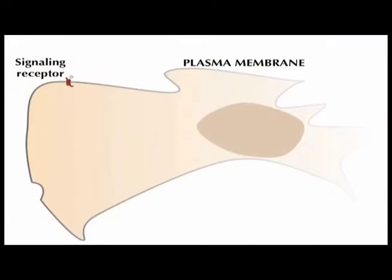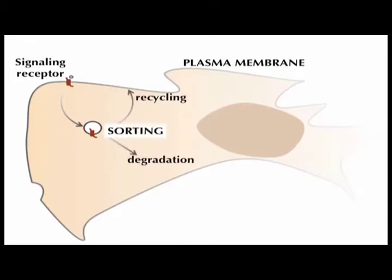Activation of signaling receptors typically leads to their internalization by endocytosis, after which they are transported to the endosome. In the endosome, they are sorted in a sequence-dependent manner into either the recycling pathway or the degradation pathway.